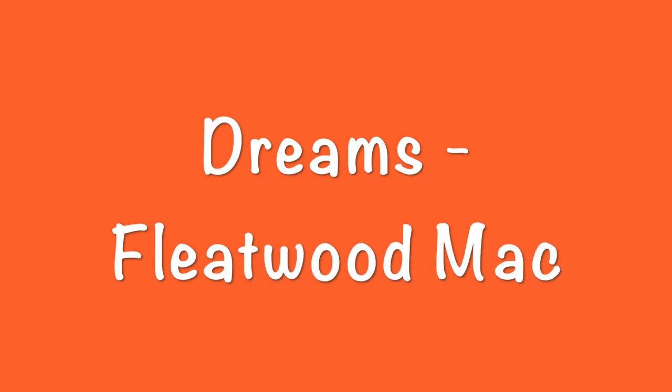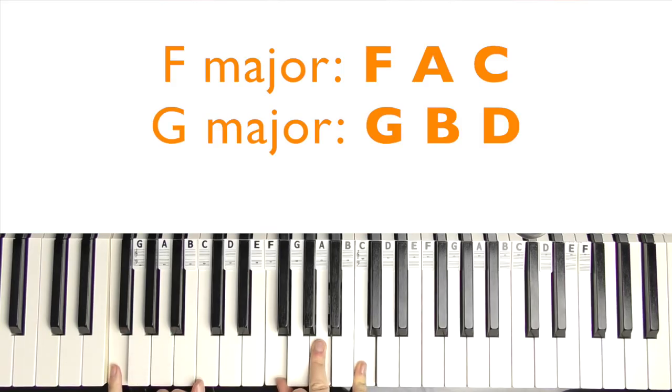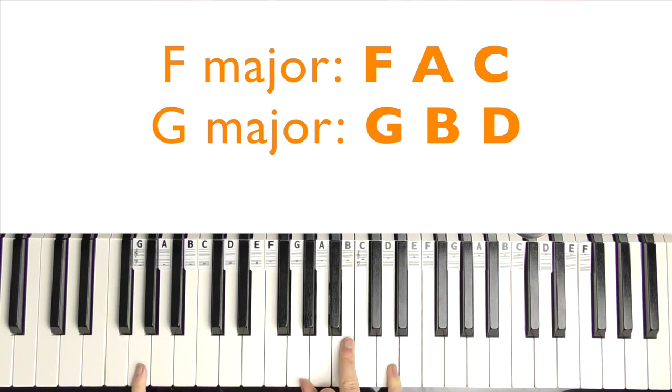So this next one is Dreams by Fleetwood Mac so it's F major which is F A and C with an F in the left hand and then you literally just move that shape up one to G B and D and it goes back and forth between them both.